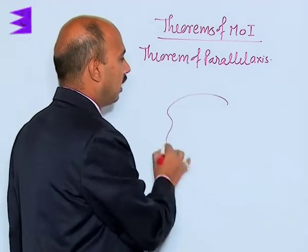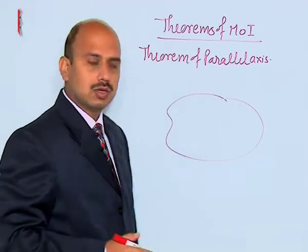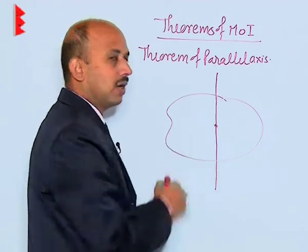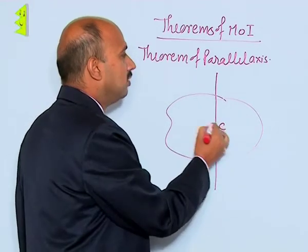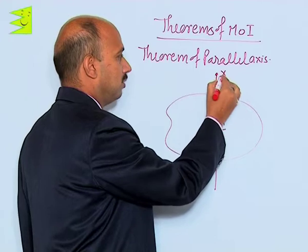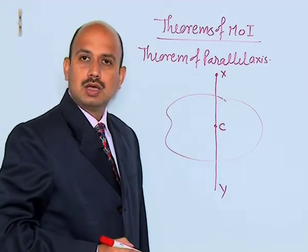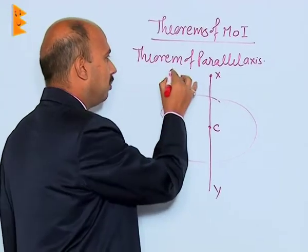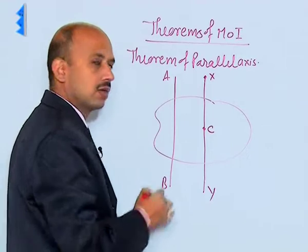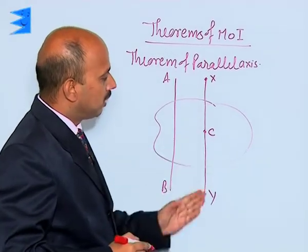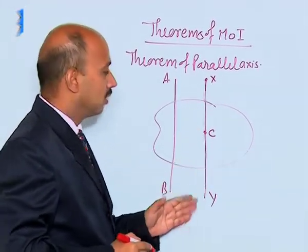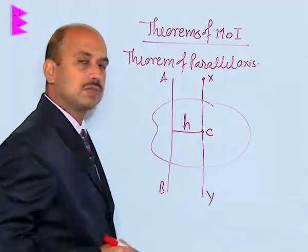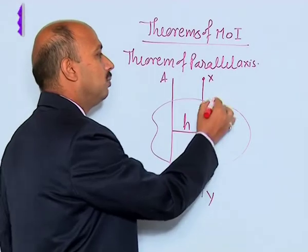Suppose a rigid body is like this — you have a rigid body, this is the center of mass, and an axis is passing through the center of mass. This axis is named X and Y. Now, if you want to get the moment of inertia about an axis A B, which is parallel to this axis passing through the center of mass and at a perpendicular distance of H, and the mass of the rigid body is M.